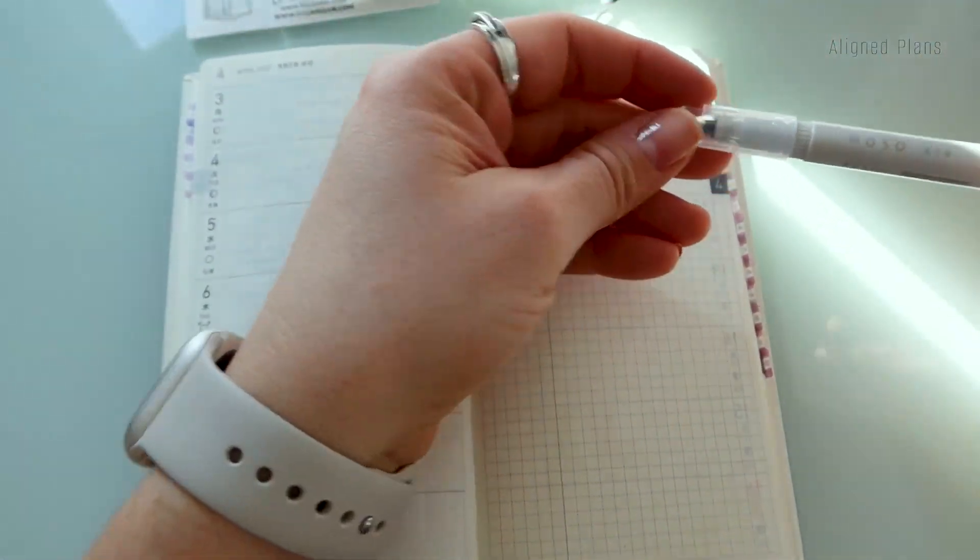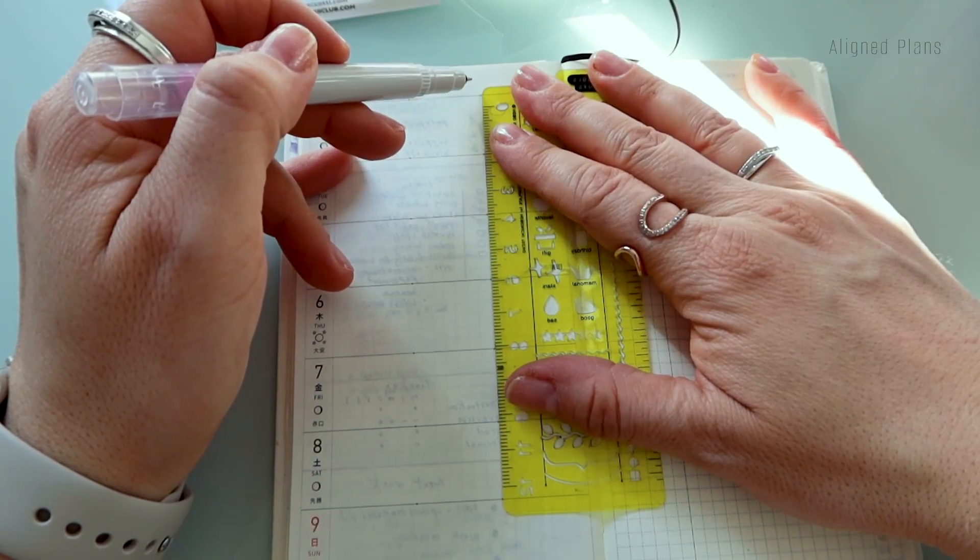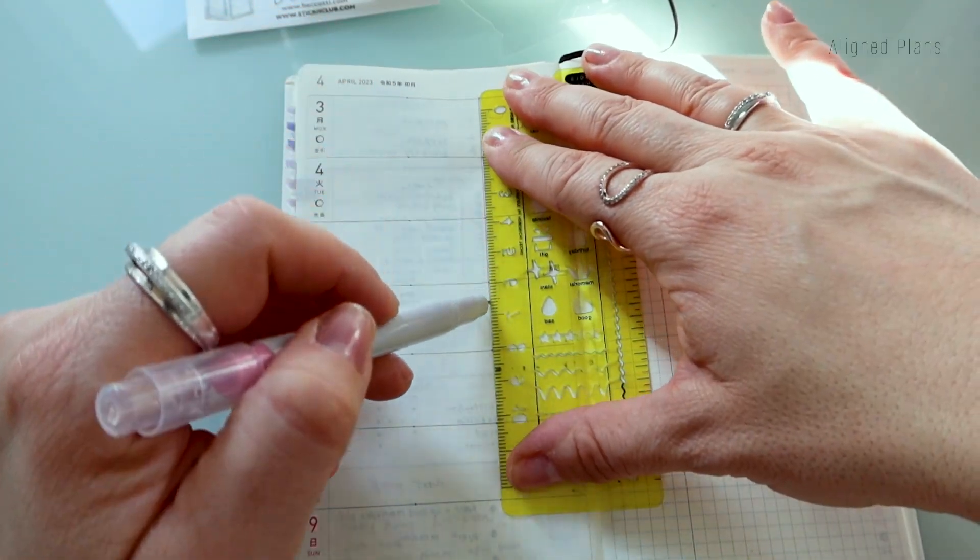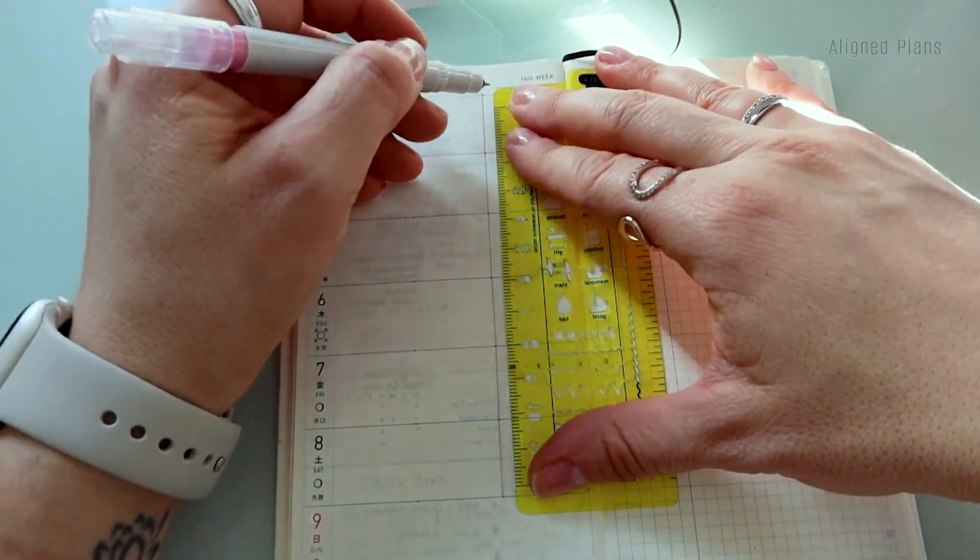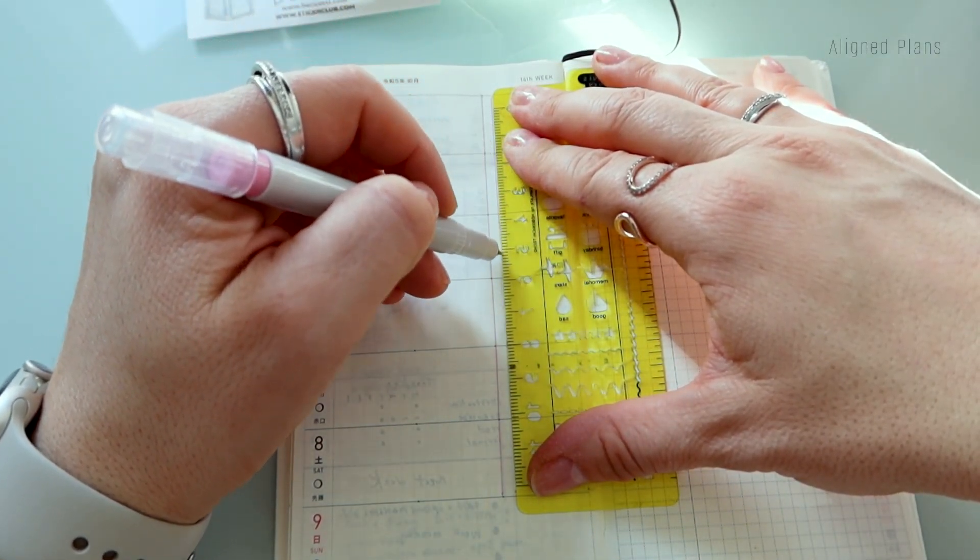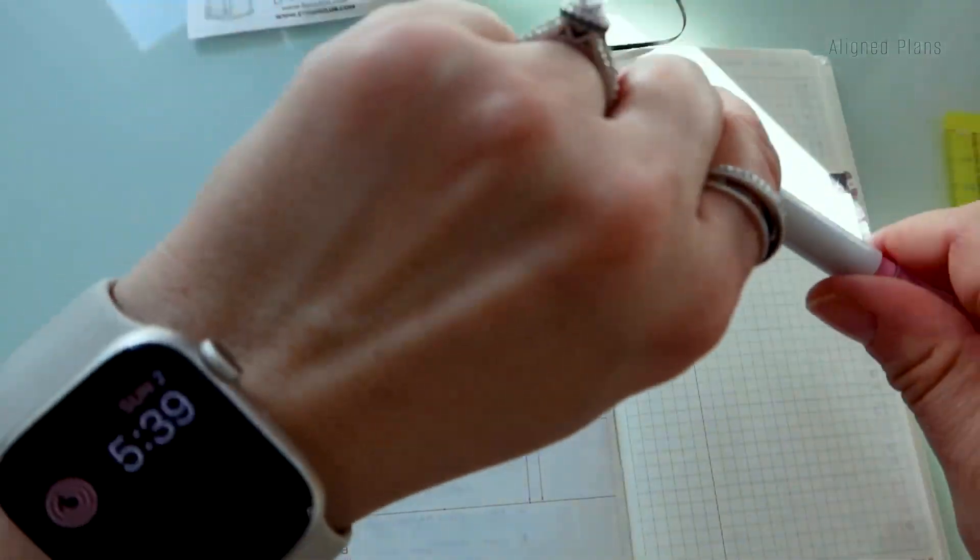Here's a thin little fine tip pen. This was actually in a sub box from Cloth and Paper back in the day. This one is pink, I also have it in light gray. So we're just setting up our grid as we speak, and the only other thing I'm going to be using is little tweezers to help with putting down stickers.